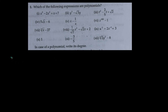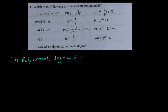So doing the first one: x to the power 5 minus 2x cubed plus x plus 7. Neither the powers are negative nor are they fractions, so obviously it is a polynomial. The degree is 5, because the highest power of the variable is 5 — that is x to the power 5 — and the other powers are 3, 1, and 0. So the degree is 5.